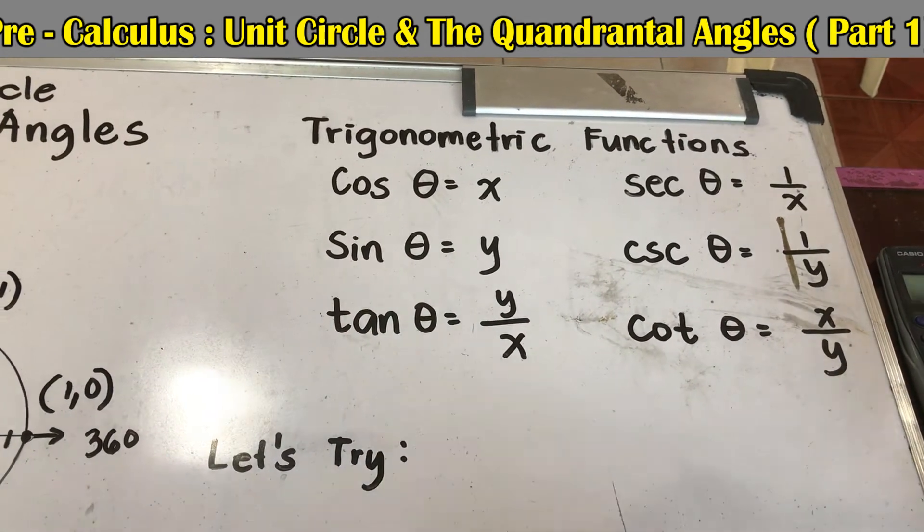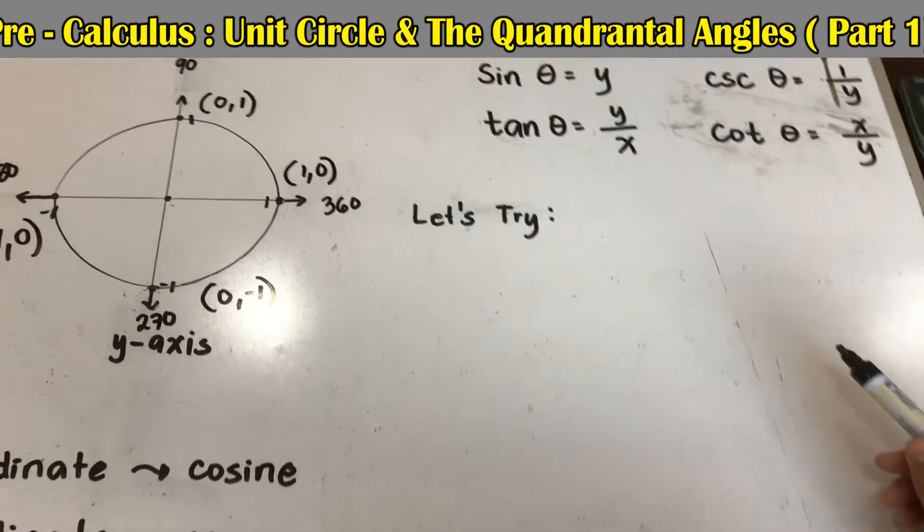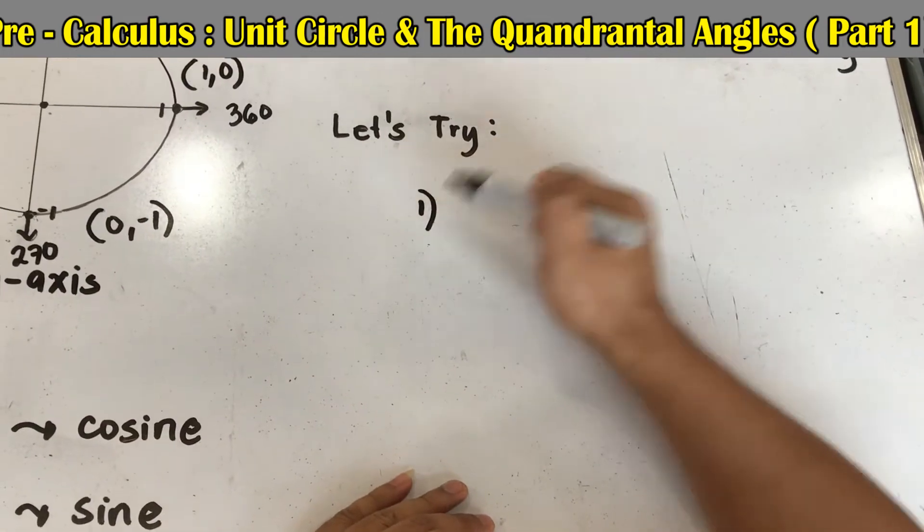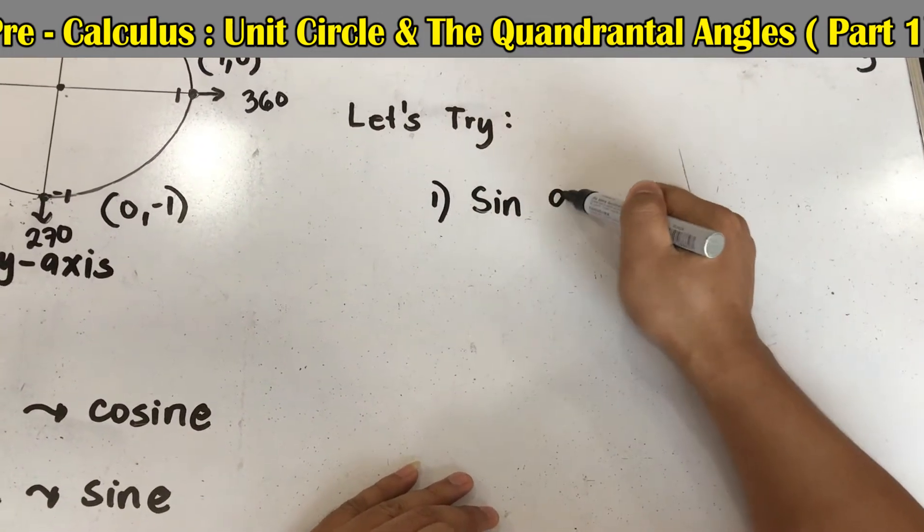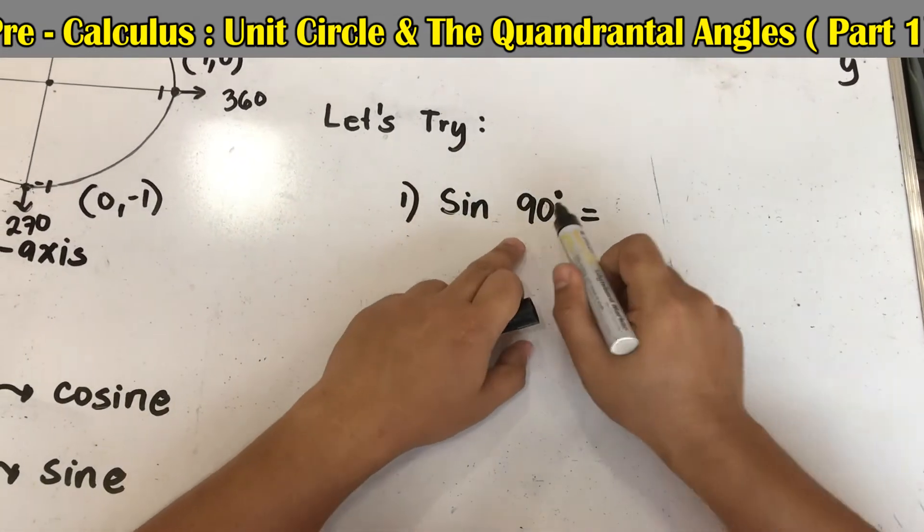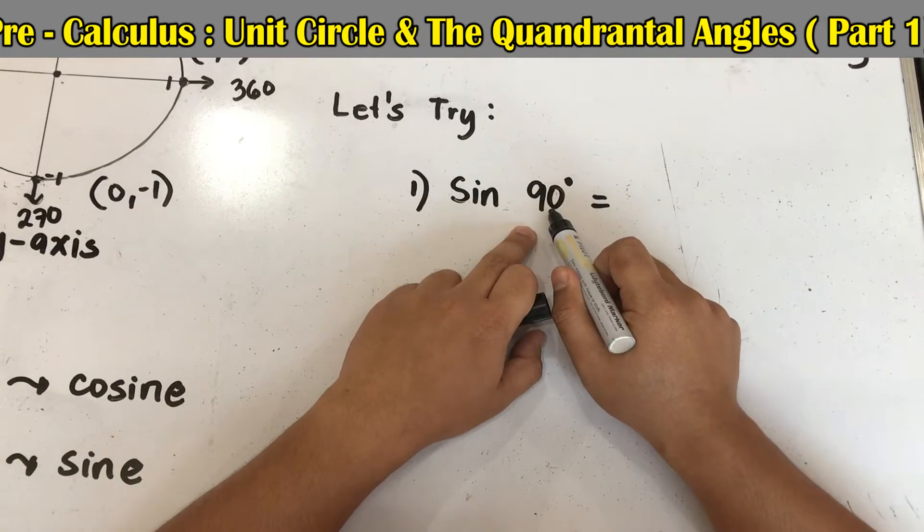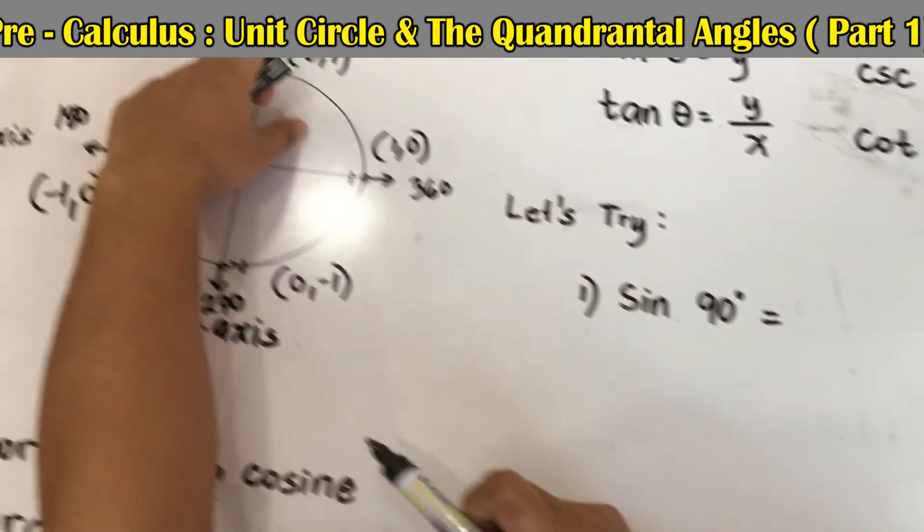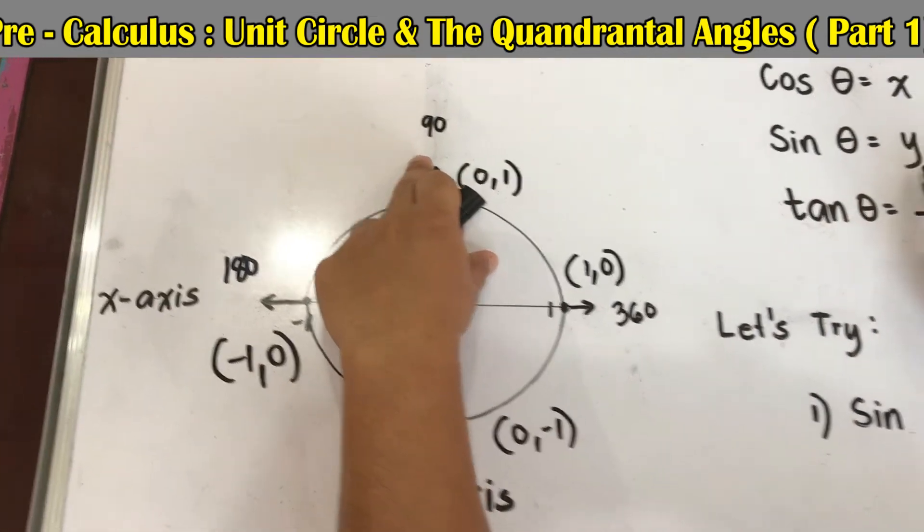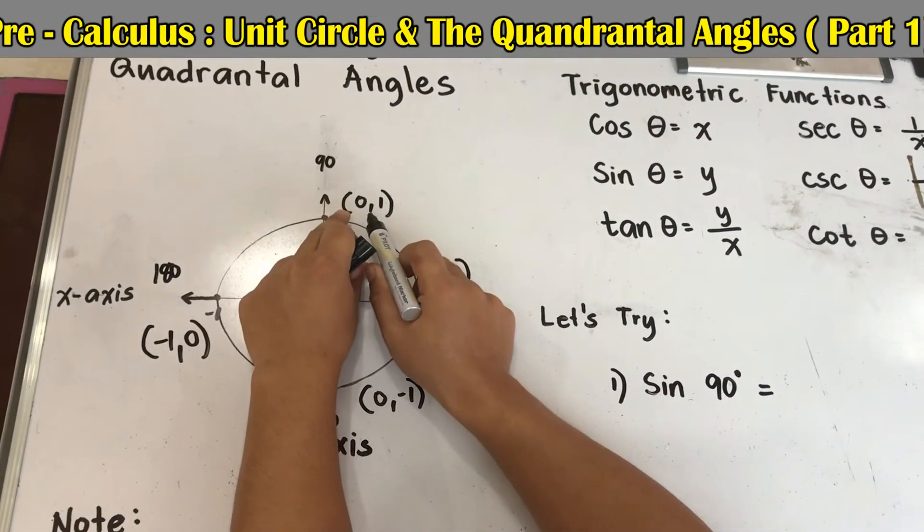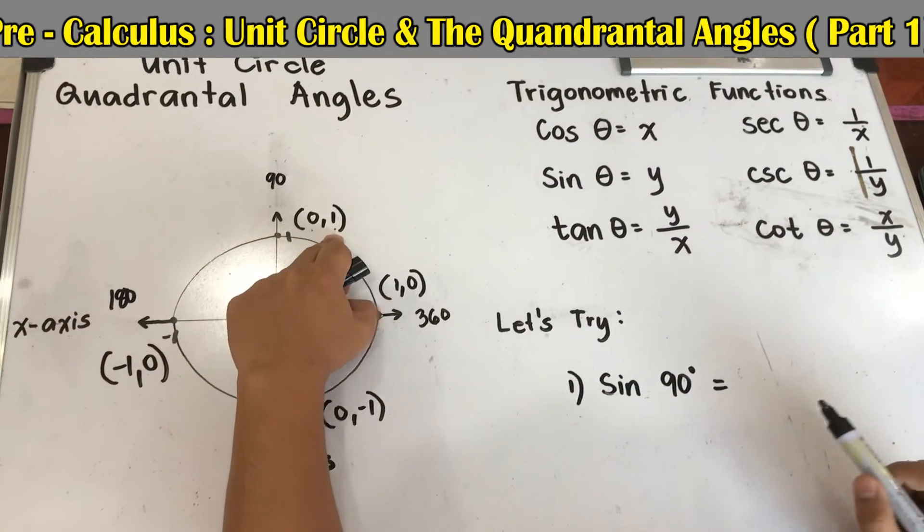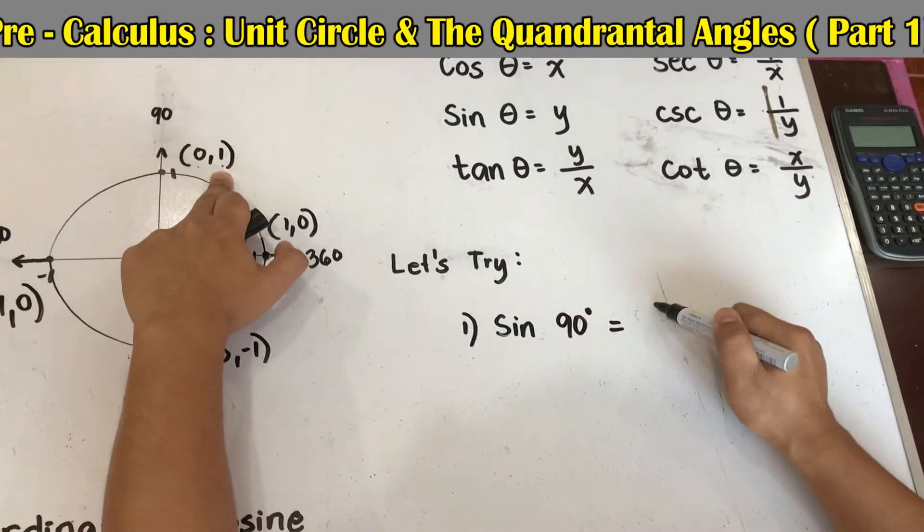Now let us use this unit circle and quadrantal angles without using a calculator. Example, let us find sine 90 degrees. First, locate the angle 90, so our angle is here. We said that sine is equivalent to y, so our coordinate is composed of x and y. This is our x and y. Therefore, sin 90 is equal to 1.